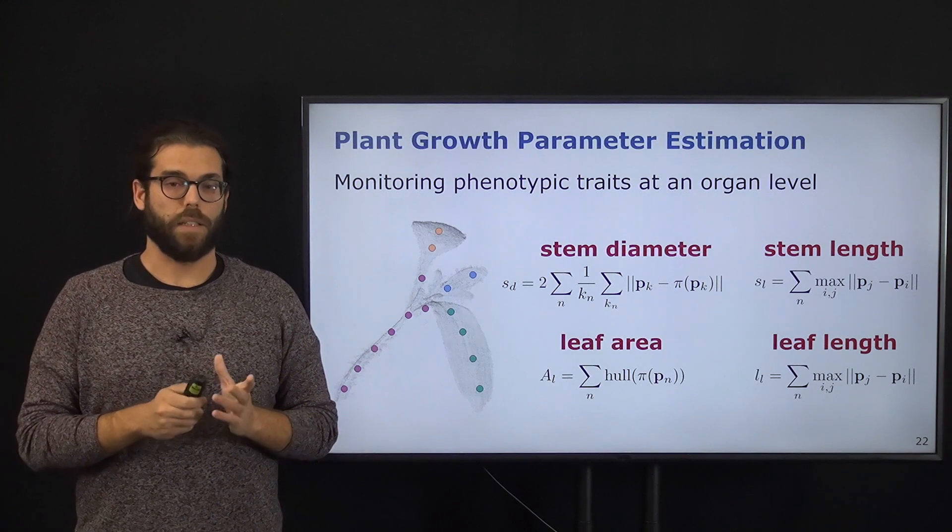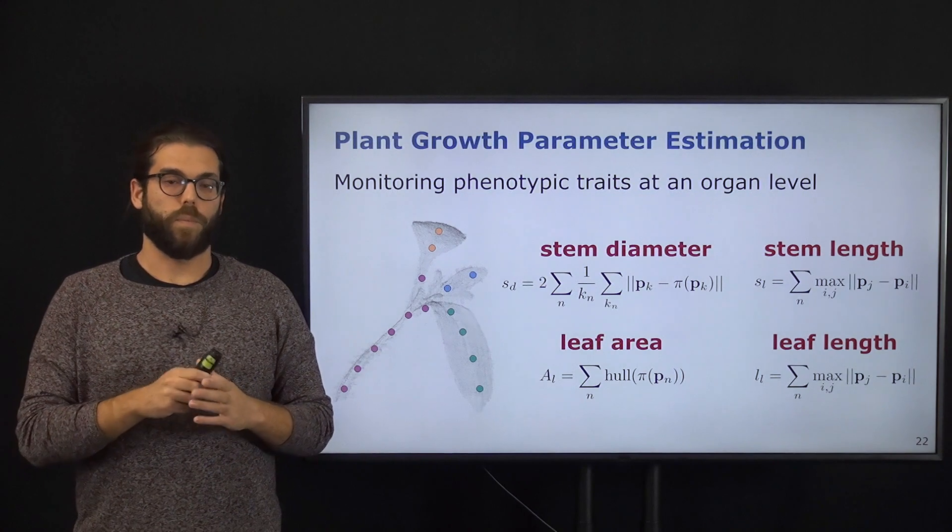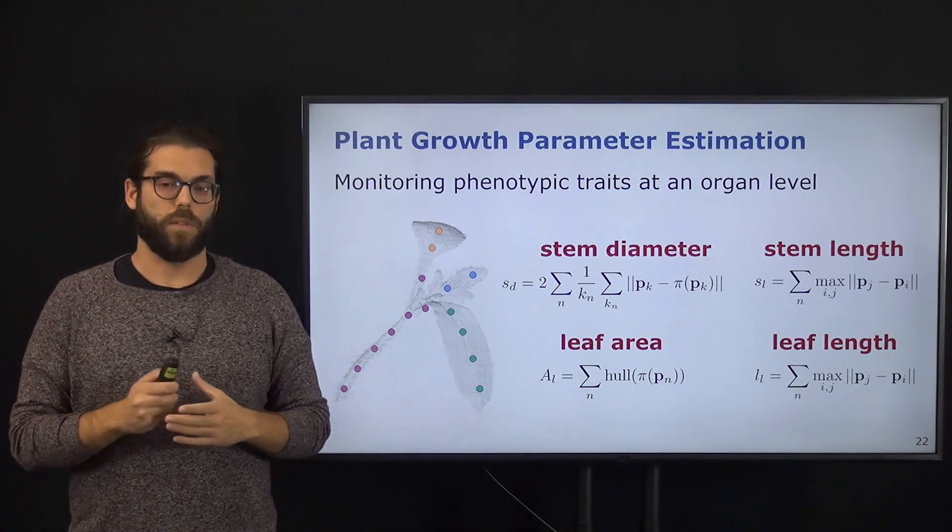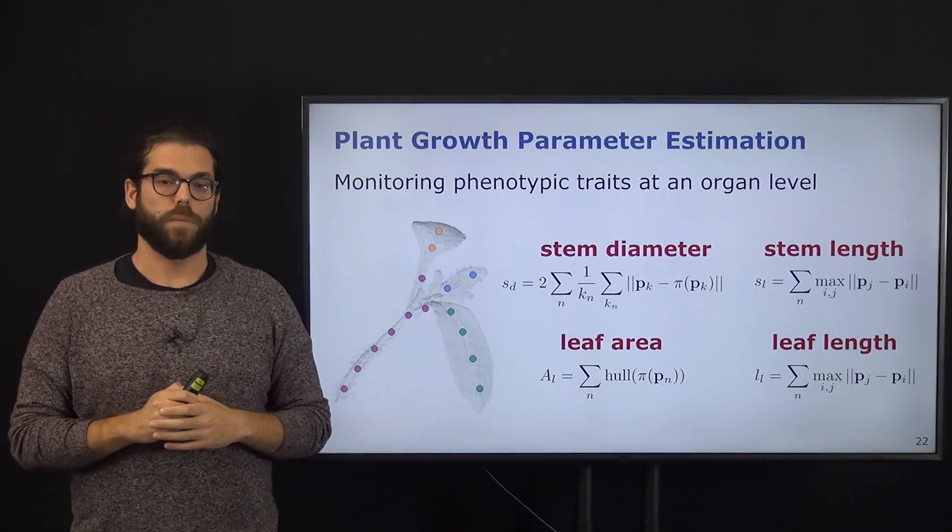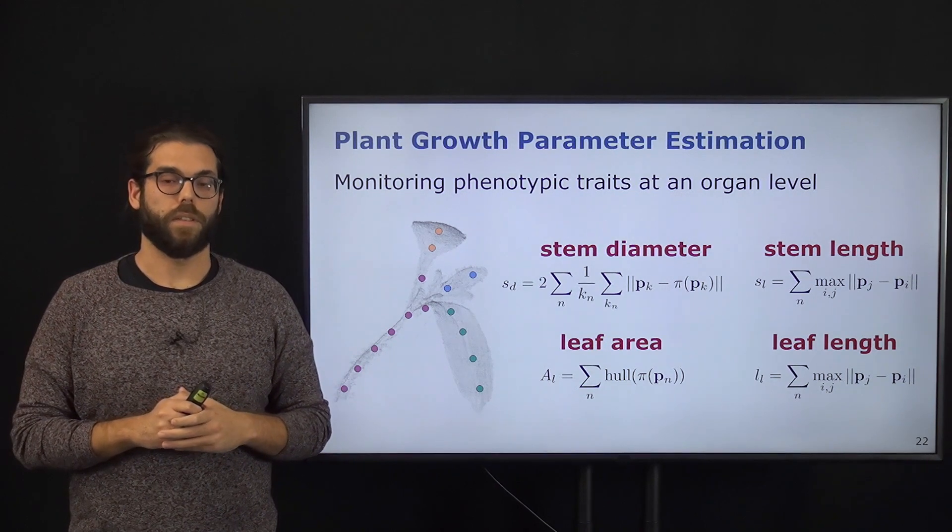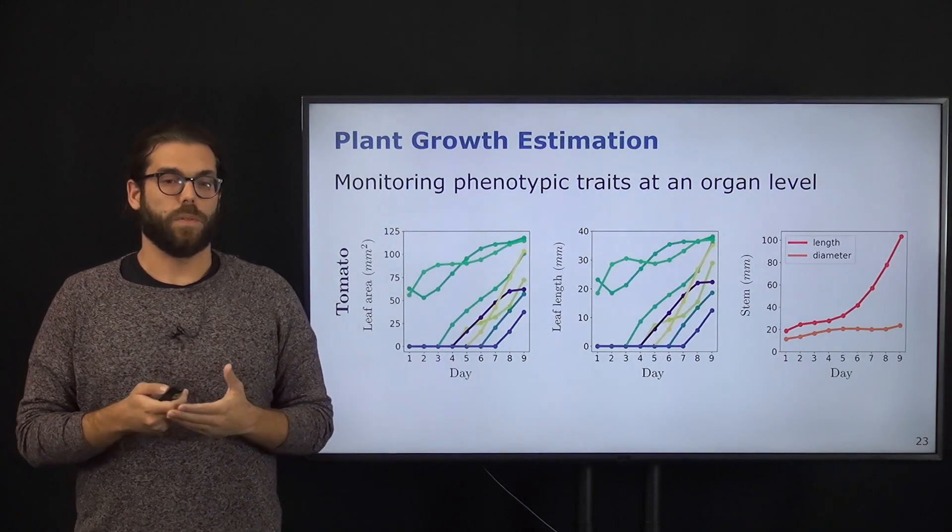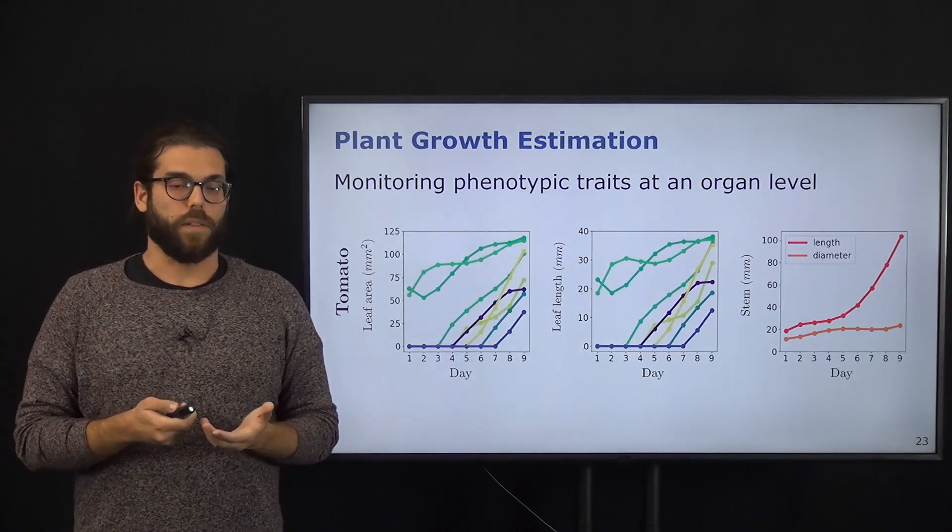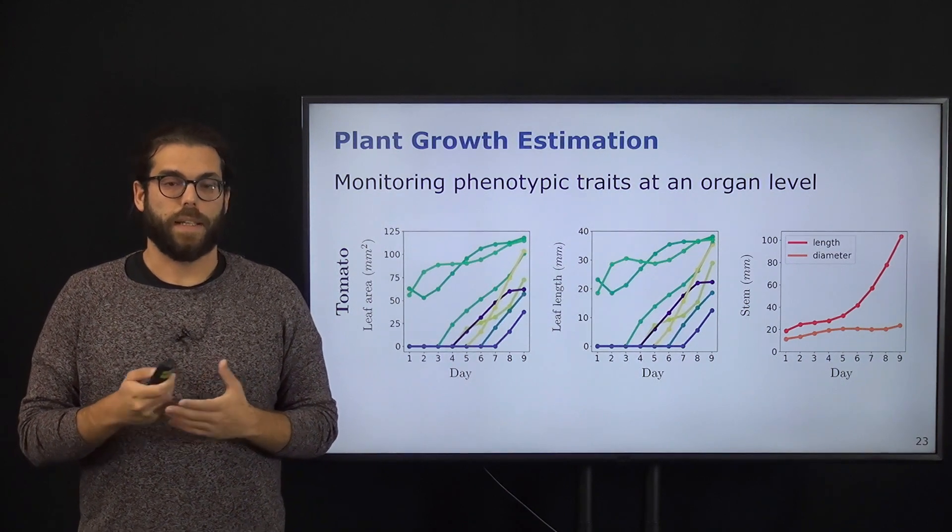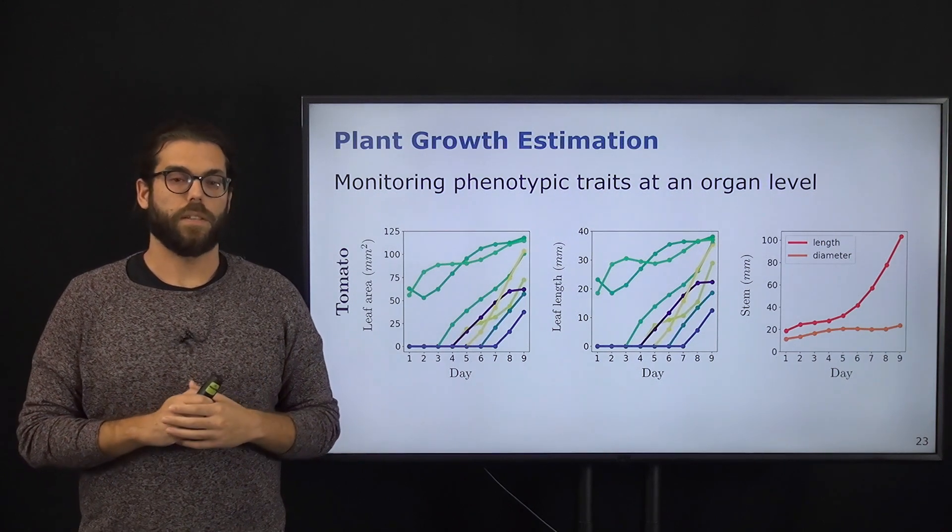For the stem length and leaf length, we use similar approaches. We consider each part of the stem or leaf and compute the maximum distance between two points in the point cloud that were associated to that part. In this way, we are able to track different traits of the plants that can tell us, for example, if the plant is undergoing stress.